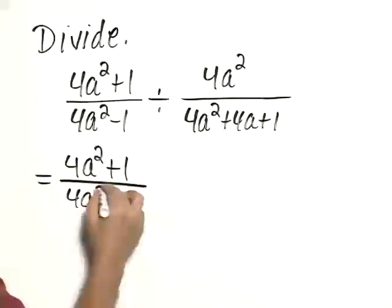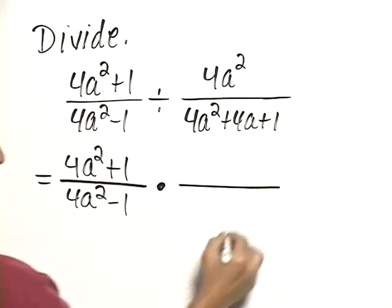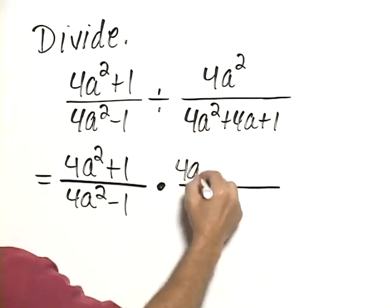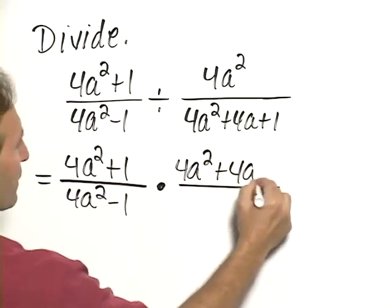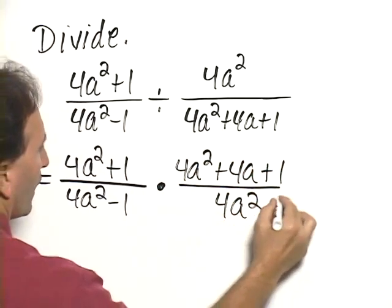over 4a squared minus 1, change to multiplication and write the reciprocal so 4a squared plus 4a plus 1 over 4a squared.